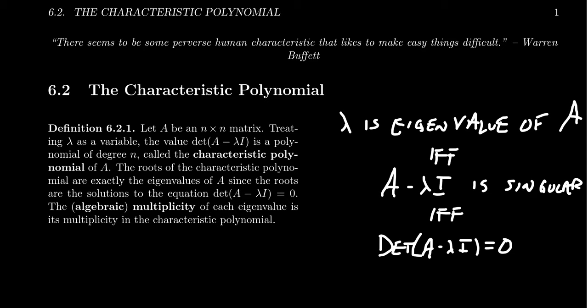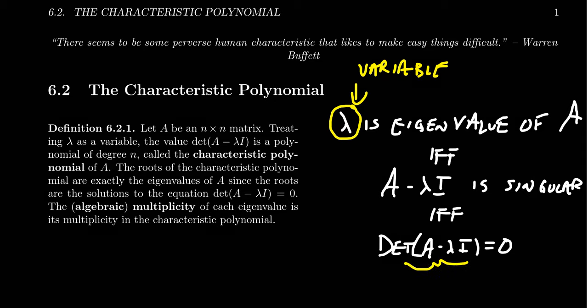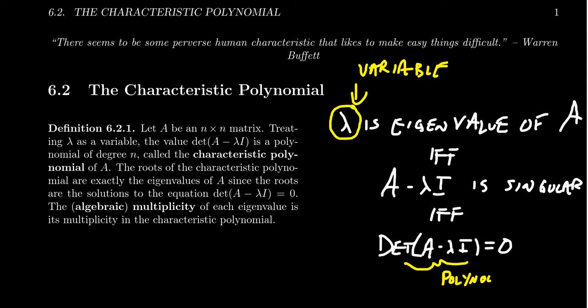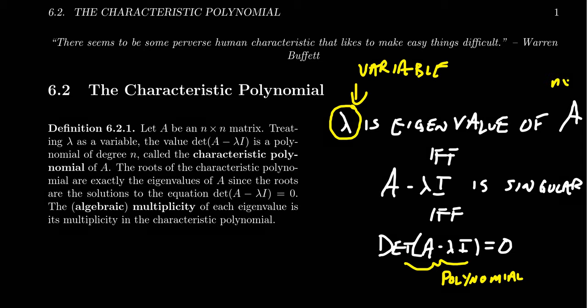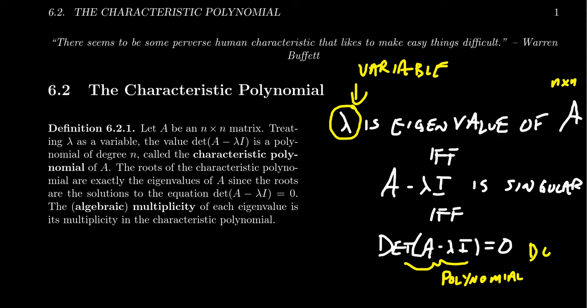If we take the perspective that since we don't know what lambda is a priori, if we treat this as a variable, that is some number to be placed in later, if we treat it like a variable, then this determinant of A minus lambda I actually turns out to be a polynomial. It'll be a polynomial of degree N, assuming A is an N by N matrix. This will be a degree N polynomial, and this polynomial is known as the characteristic polynomial of A.